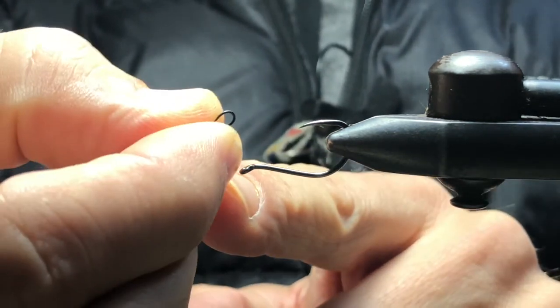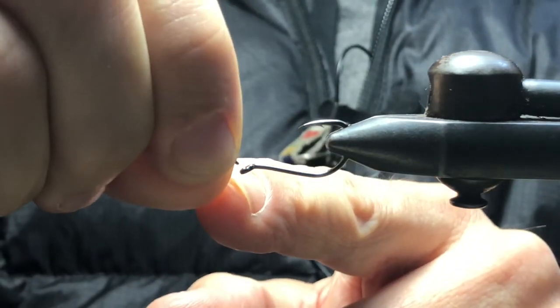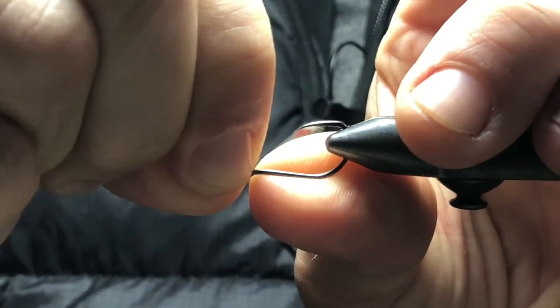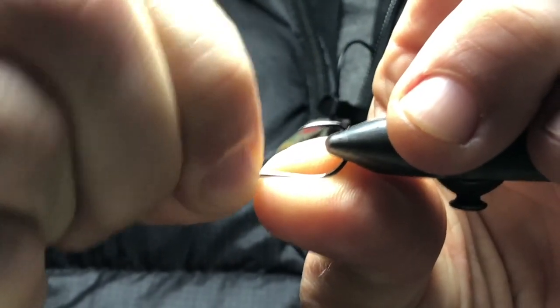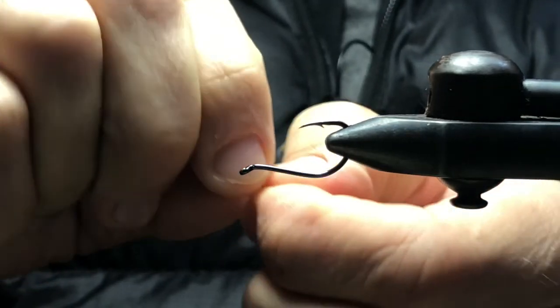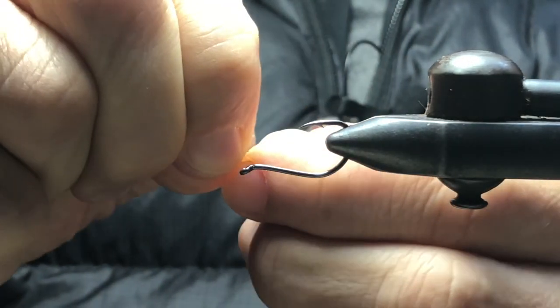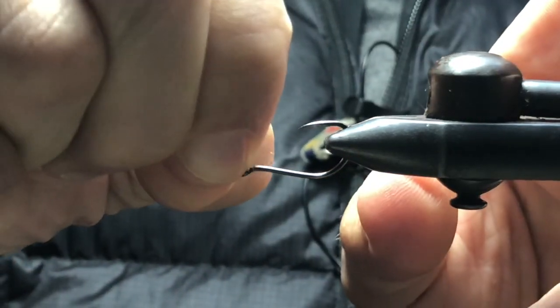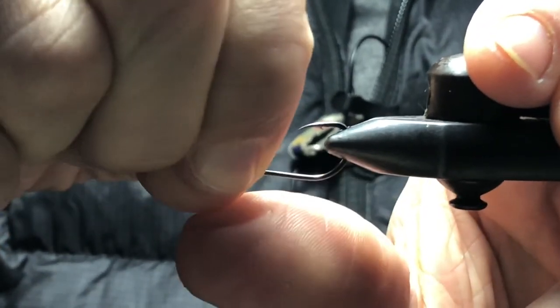But here's the key, especially with this wire and the small hook - I got to get this through this little hole. So I'm going to pinch. Let's see if I can get this. I'll do my best to pinch. The easier way to do this would be to use a hook with a bigger eye.